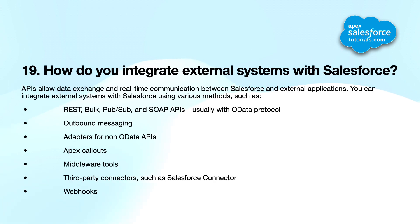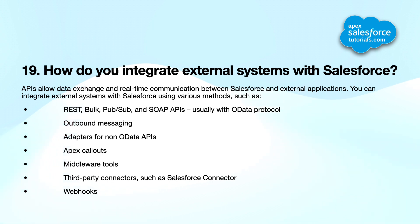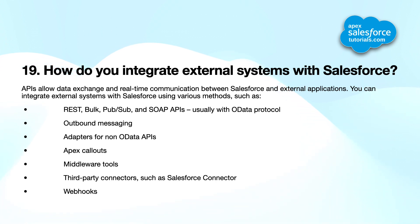Nineteenth question: how do you integrate external systems with Salesforce? APIs allow data exchange and real-time communication between Salesforce and external applications. You can integrate external systems using various methods such as REST, Bulk, Pub/Sub, and SOAP APIs, usually with OData protocol, outbound messaging, Apex callouts, middleware tools, third-party connectors such as Salesforce connectors, and webhooks.